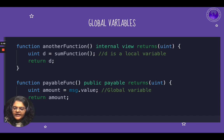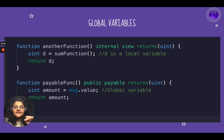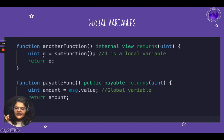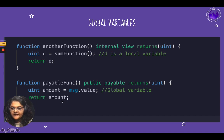In your notion document that you have received for this week, you will find a list of global variables as well as restricted keywords that are used in Solidity, which you cannot use to name your variables. The names of the variables shown here are A, B, K, D, and amount — all of these are variable names.